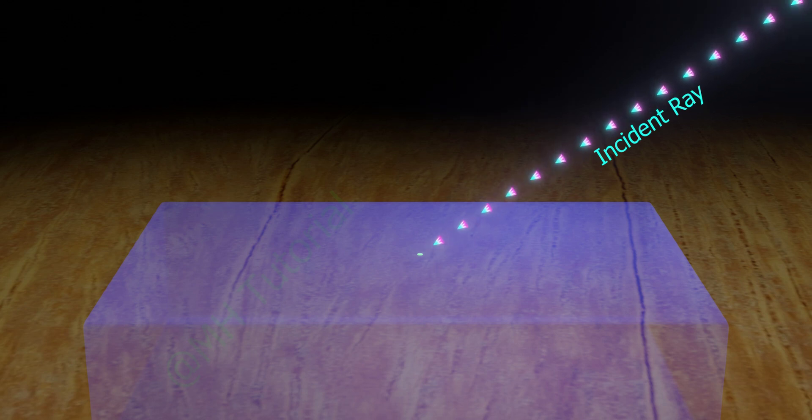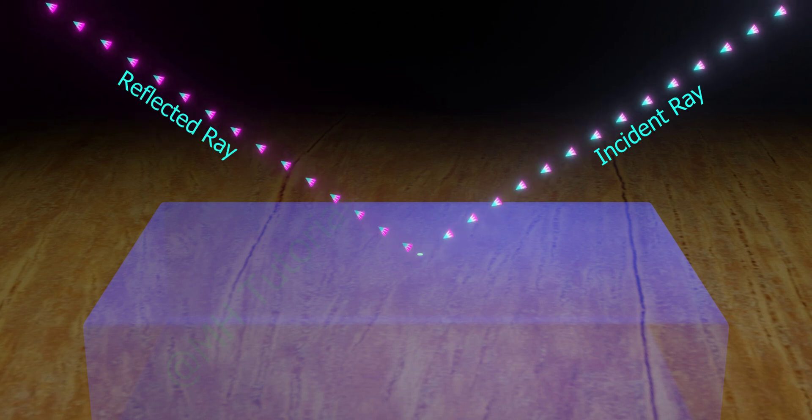Before explaining the laws of reflection, let's see some terms related to reflection. The ray of light that approaches the interface is called the incident ray. And the ray that reflected back is called reflected ray.